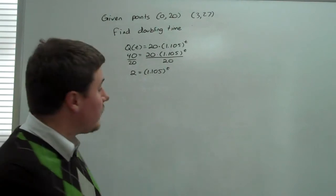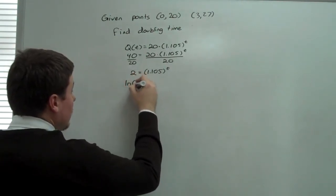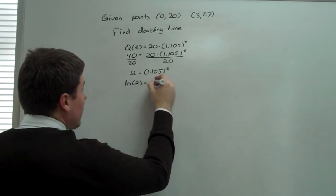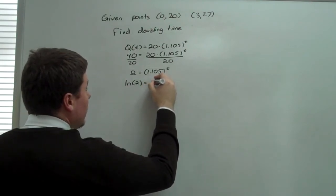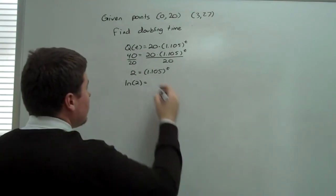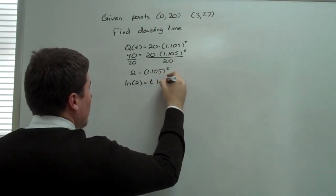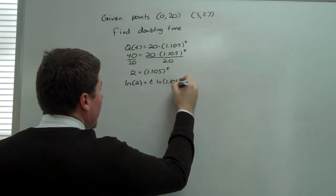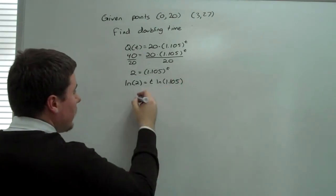Now I'm a fan of natural log. So I'm going to use ln of 2 is going to equal t times ln of 1.105. So to solve for t, we divide that over.